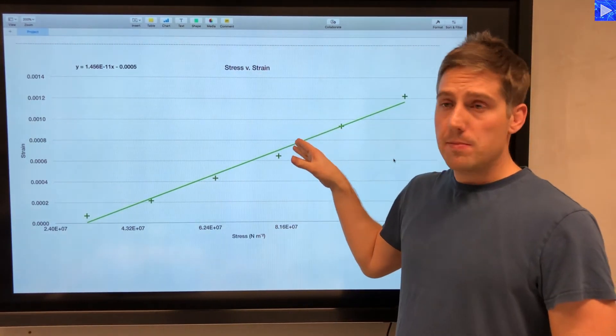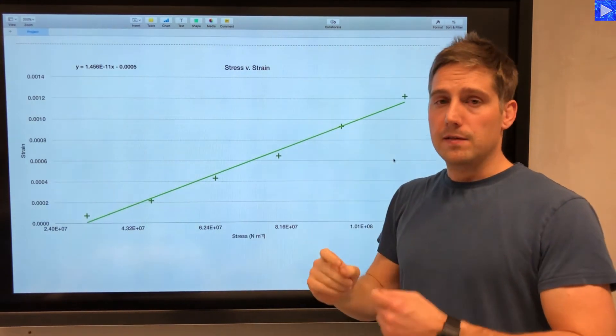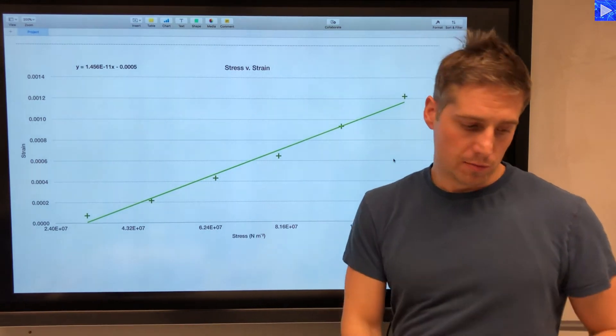So what I'm going to do is determine the gradient of the line, and then 1 divided by that will give me Young's modulus.